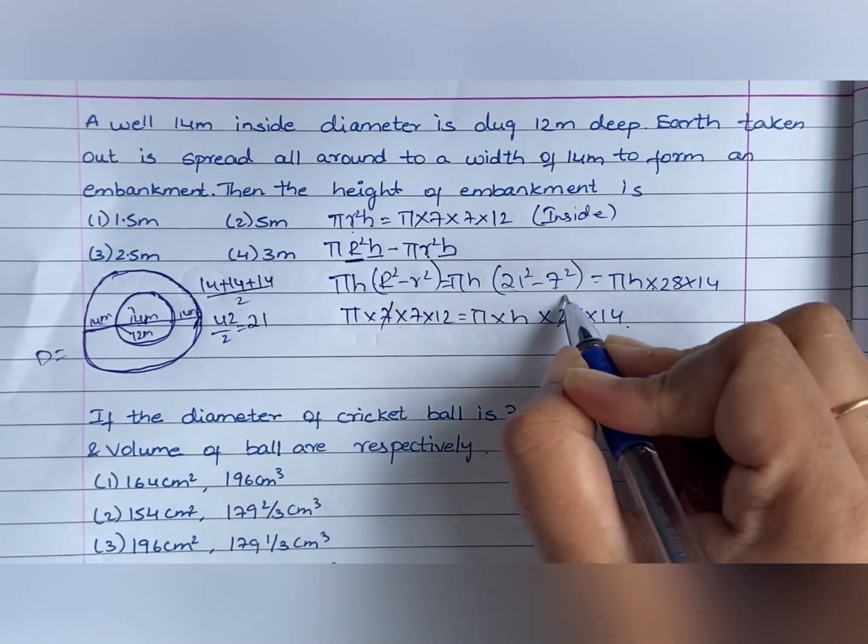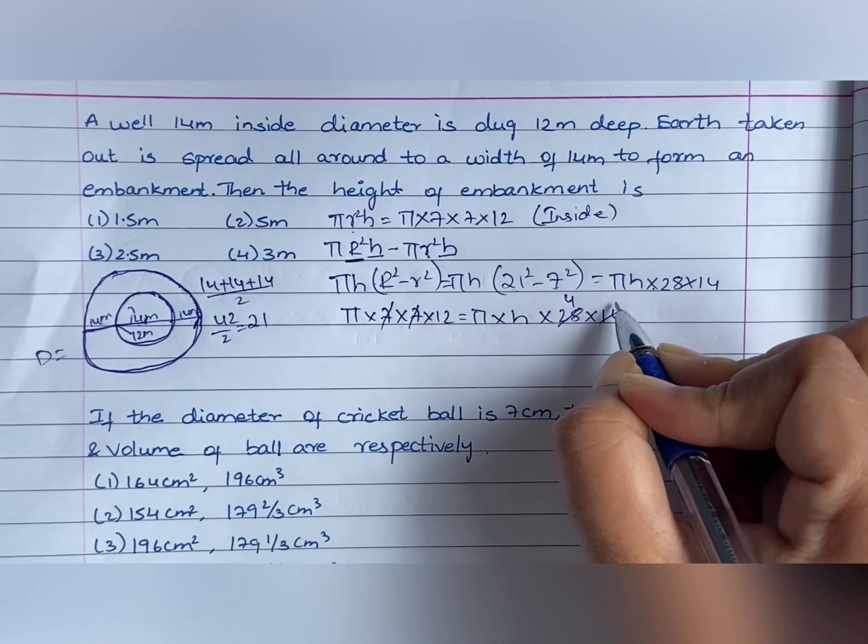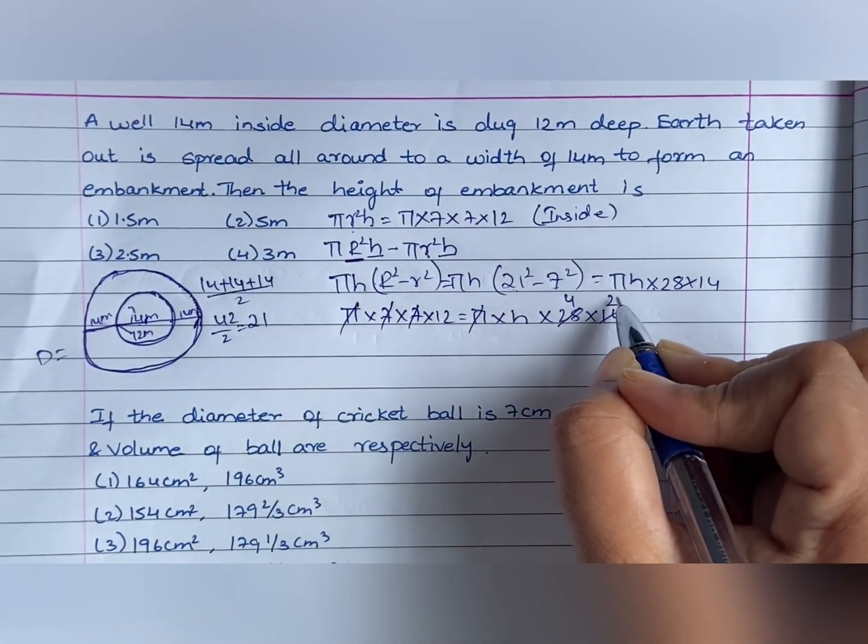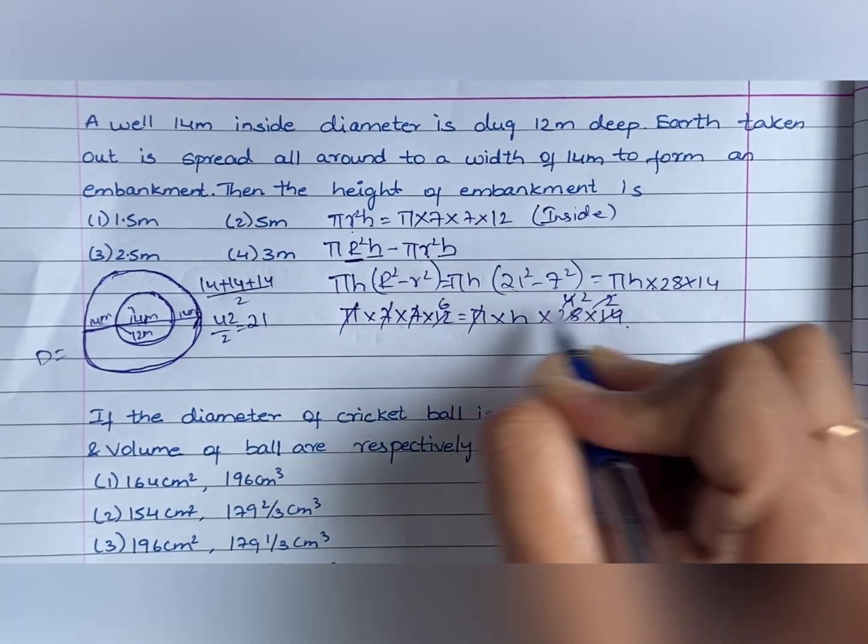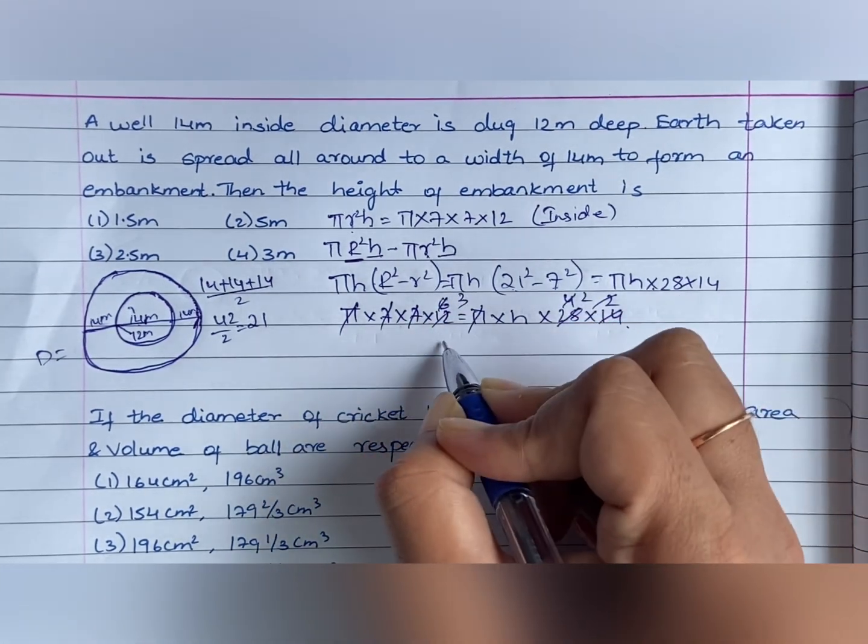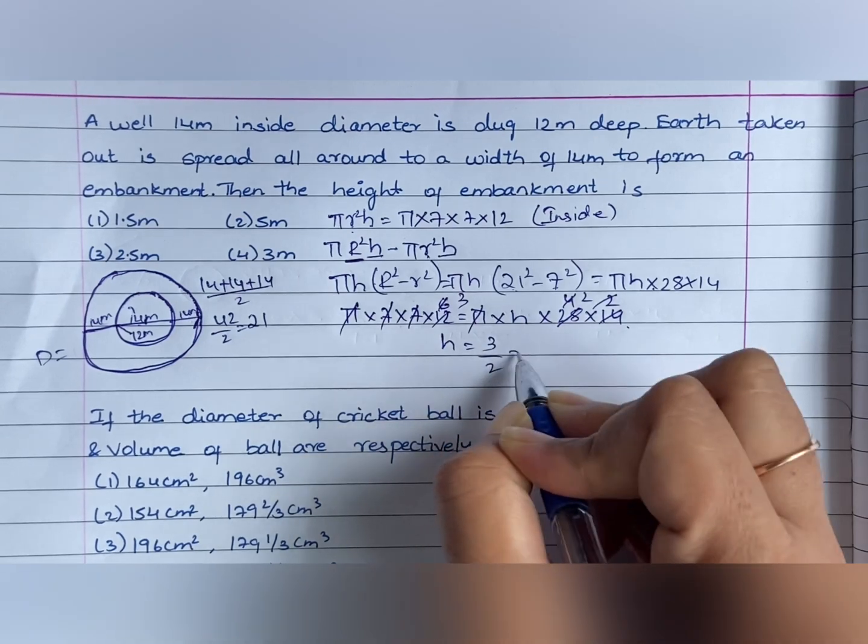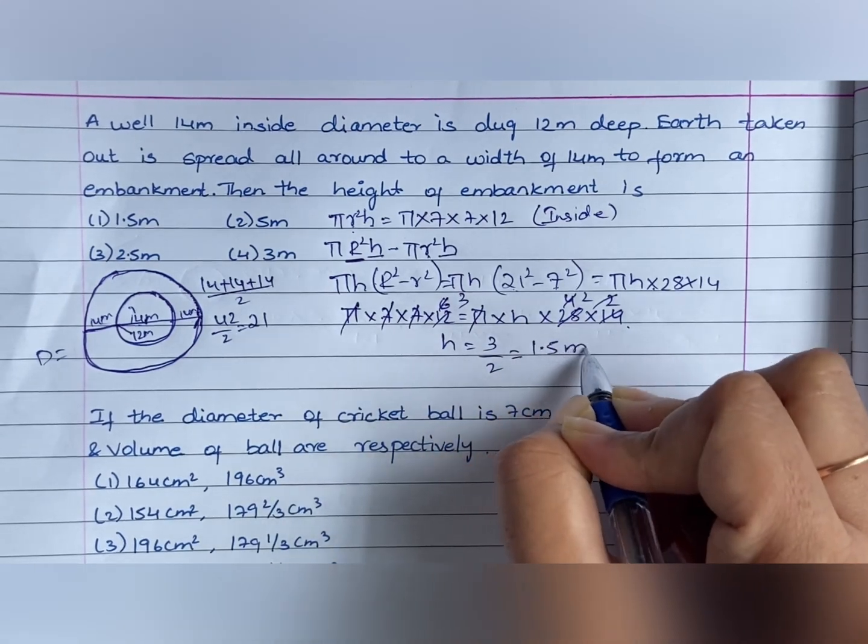7, 4 times 7, 2 times pi cancel. 2, 6 times 2, 2s cancel, 3s cancel. So, h will be equal to 3 by 2 that is equal to 1.5 meters is the answer.